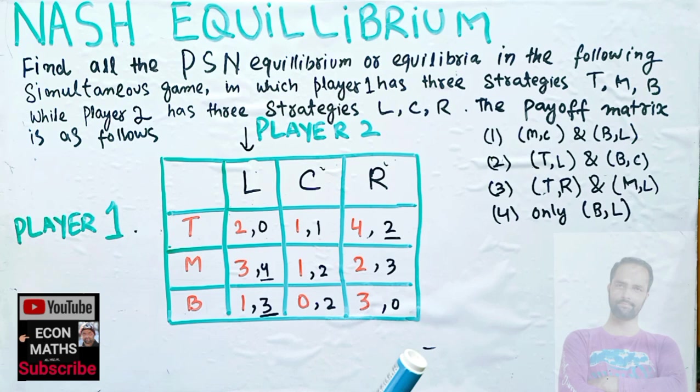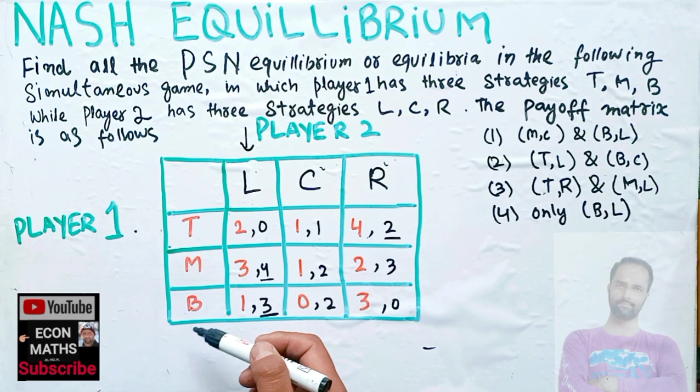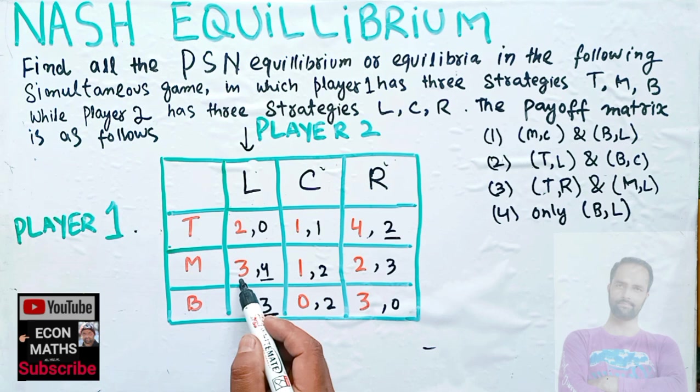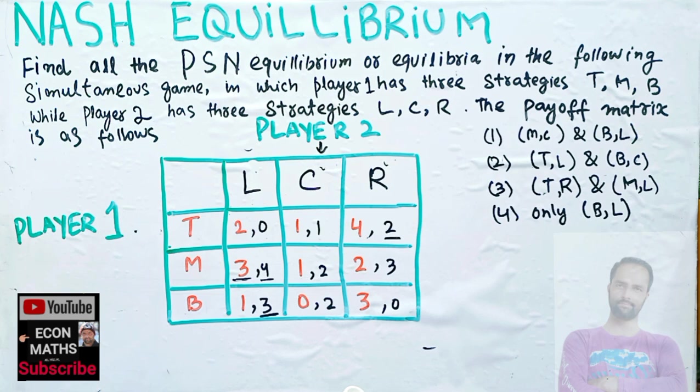If player two chooses to play L, player one has three options: T, M, or B. The corresponding payoffs for player one are 2, 3, and 1. Player one will choose the highest payoff, which occurs when he chooses M, so we underline that. Now let's see what happens when player two chooses strategy C.